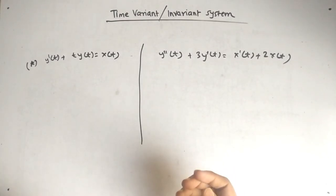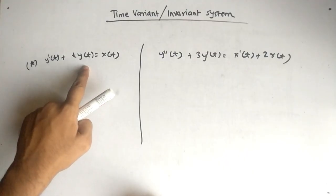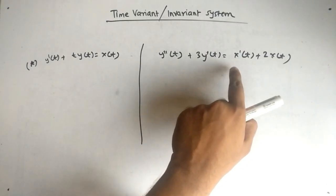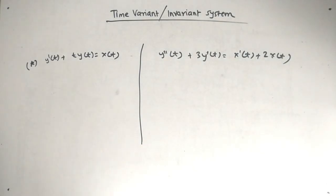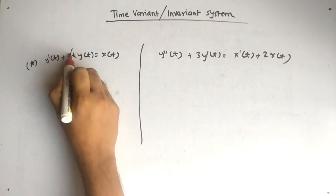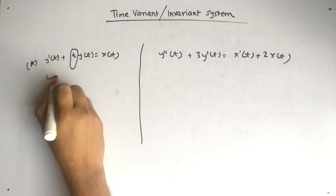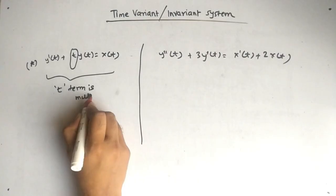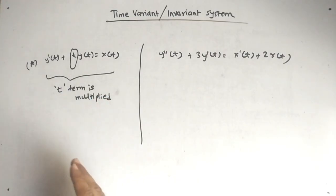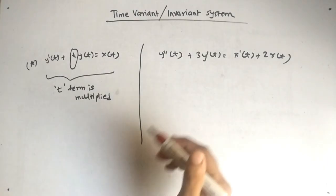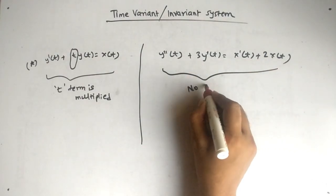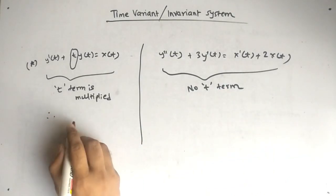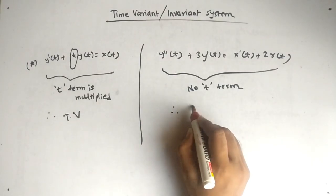Now let's look at two differential equations. The first is y'(t) + t·y(t) = x(t), and the second is y''(t) + 3y'(t) = x'(t) + 2x(t). The difference is that in the first equation, a t term is multiplied by y(t). The simple rule is: if a t term is multiplied by any function y(t) or x(t), it is time variant. If there is no t term multiplied, it is time invariant.